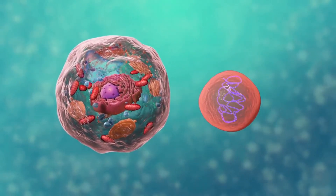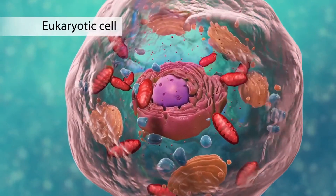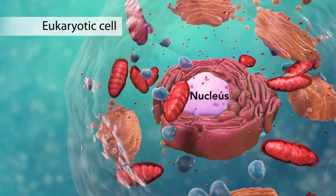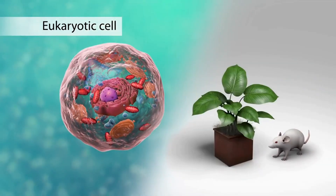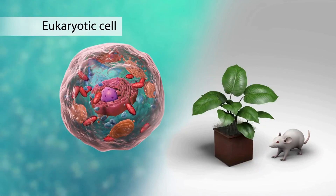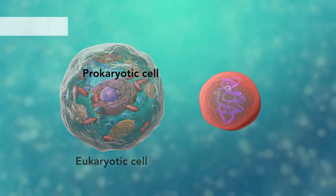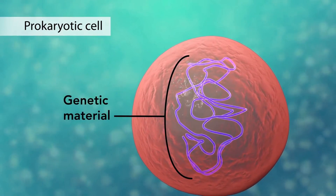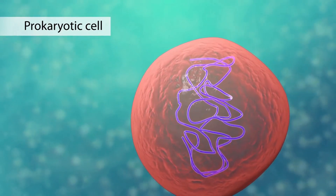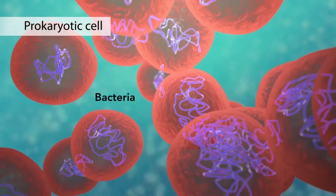There are two broad categories of cells. The first category is eukaryotic cells — they have organelles, which include the nucleus and other special parts. Eukaryotic cells are more advanced, complex cells such as those found in plants and animals. The second category is prokaryotic cells. They don't have a nucleus or membrane-enclosed organelles. They do have genetic material, but it's not contained within a nucleus. Prokaryotic cells are always unicellular organisms, such as bacteria.